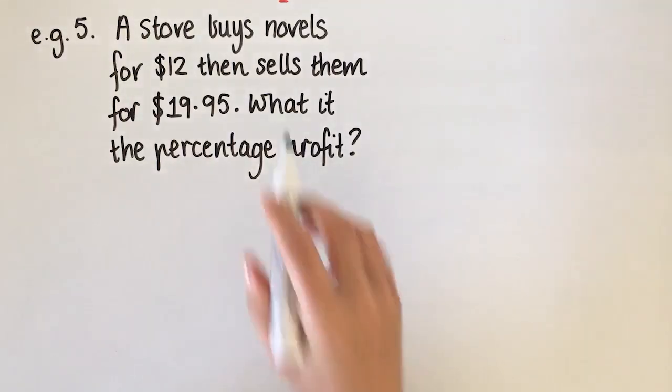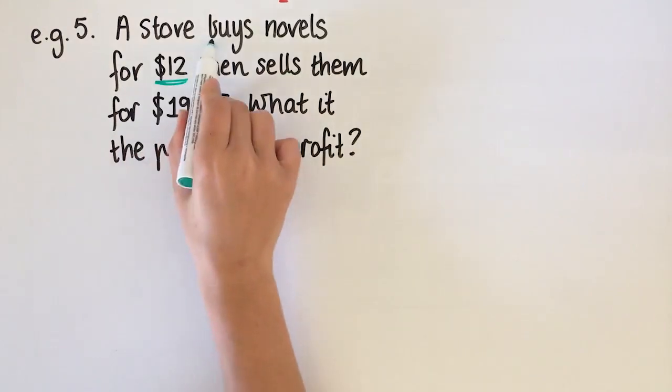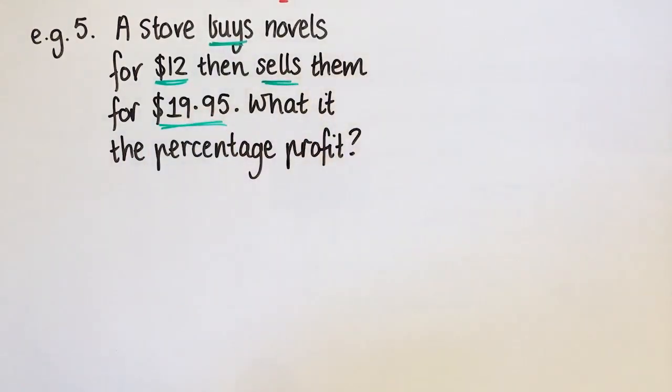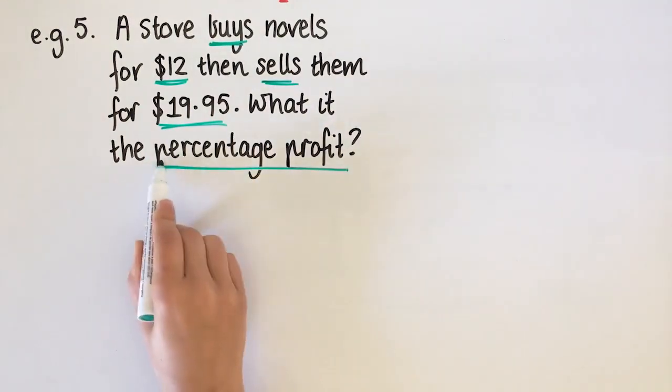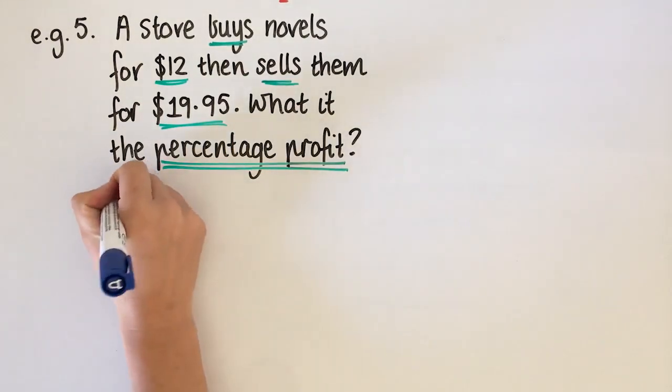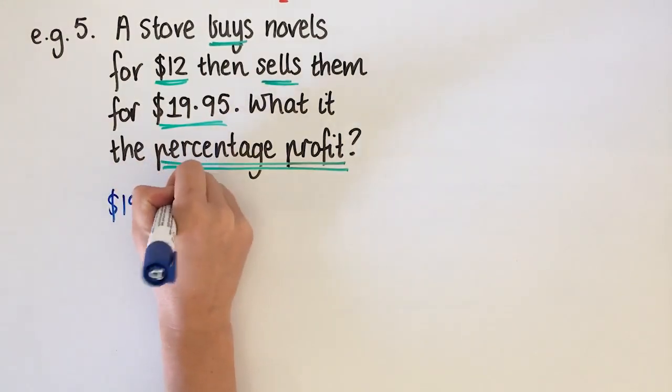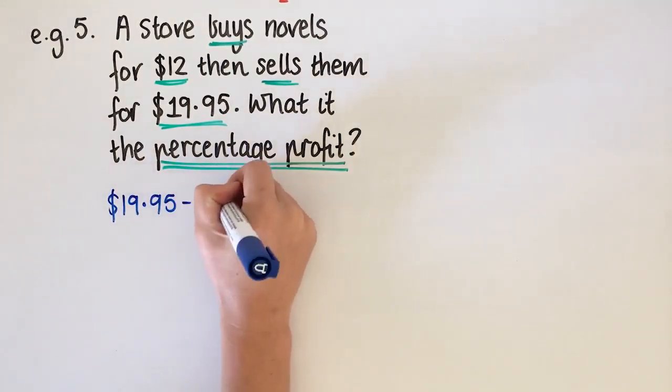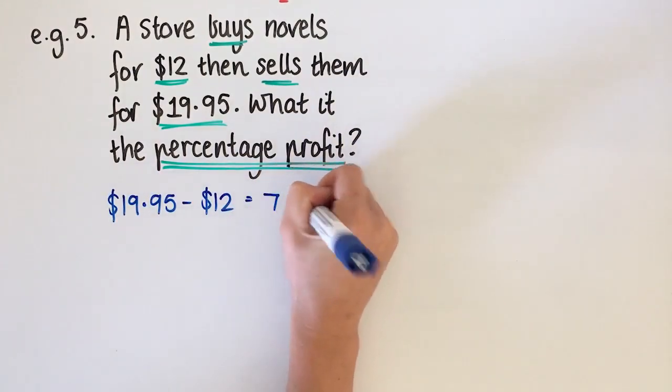Alright, so this one's a little bit different. A store buys novels for $12 and then sells them for $19.95. What is the percentage profit? So in the last questions, we're asked for the selling price or things like that. But this time we're actually asked for the percentage profit. So this is actually similar to the very first question, except it's a worded problem instead. So what we actually need to do is we still need to figure out the change. So the change from $19.95 from $12 is going to be $7.95.